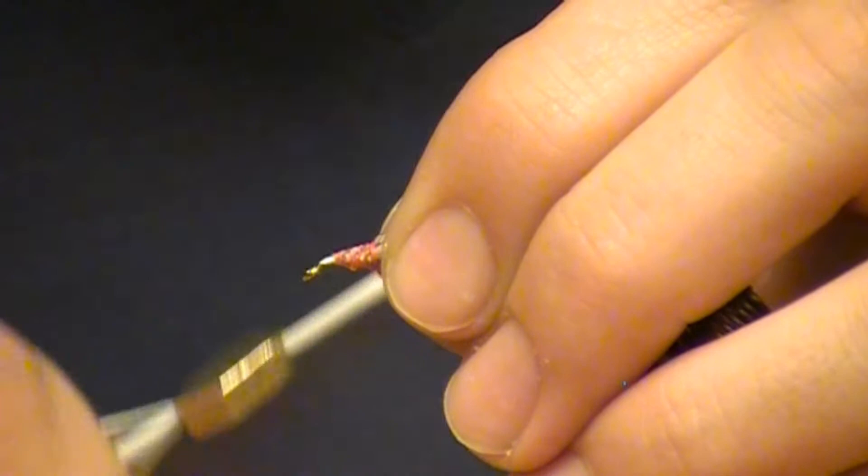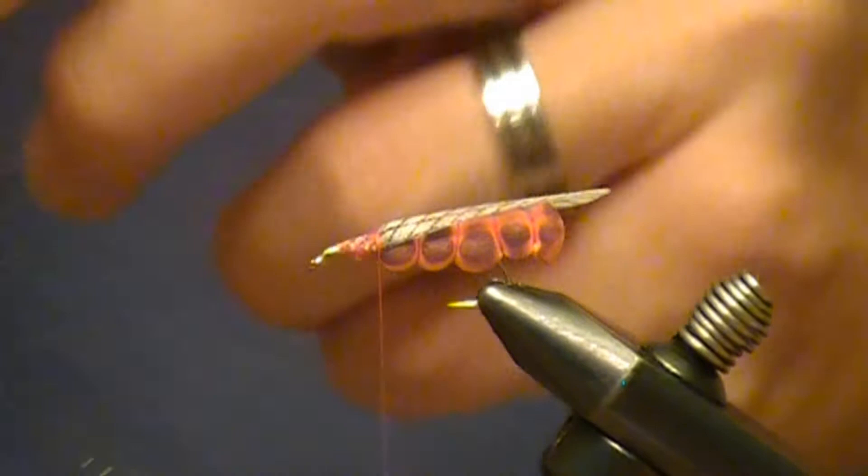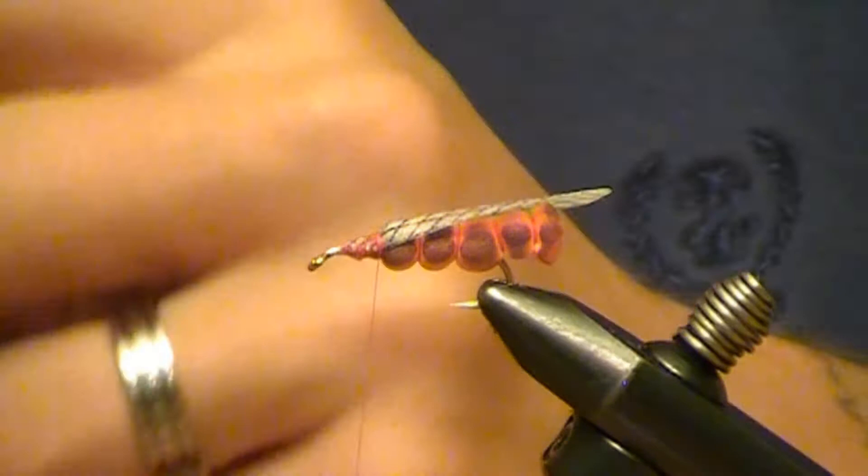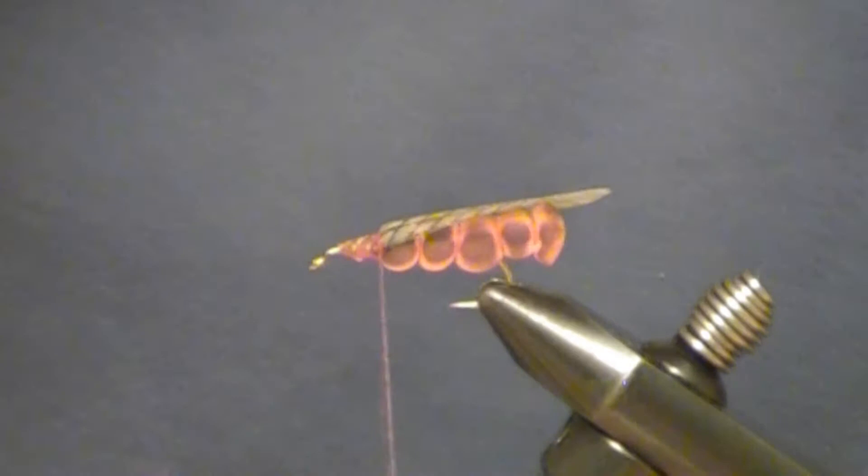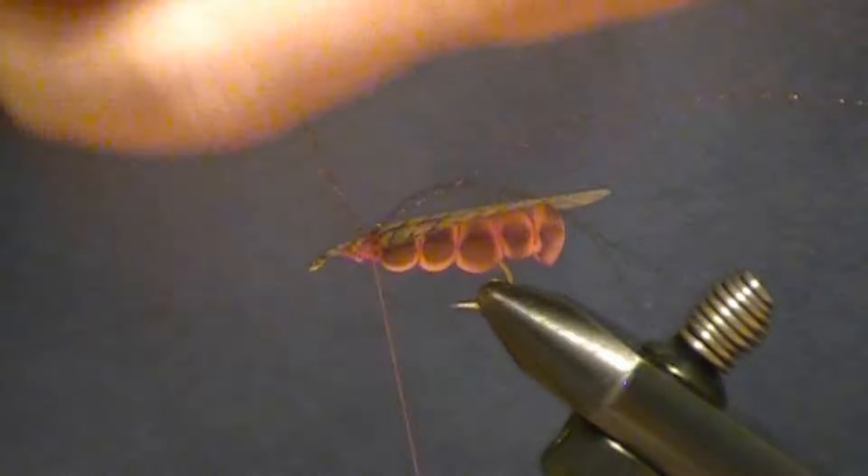Okay, now I'm just going to take a couple strands, three strands brown crystal flash. Tie it in on top, double it back so you'll have actually six strands coming off the rear and clip it even with your wing.